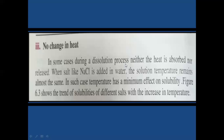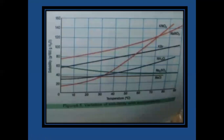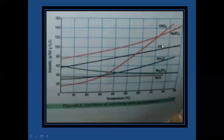This is a very important exam question. Note down this explanation in your notebook along with the graph. All three possibilities and their examples are not fully covered in the textbook. The graph shows temperature on the x-axis and solubility in grams per 100 grams of water on the y-axis, with different plots for different substances.